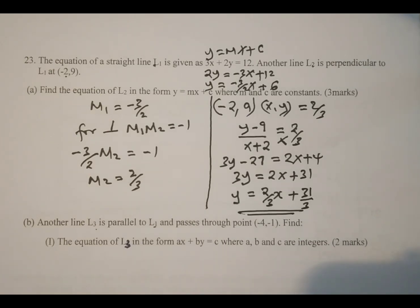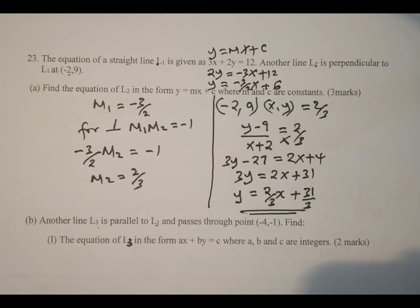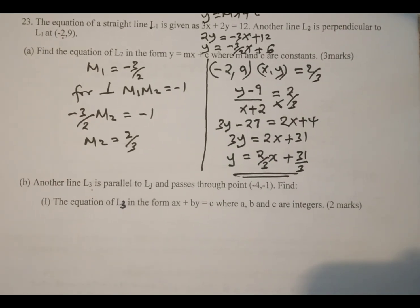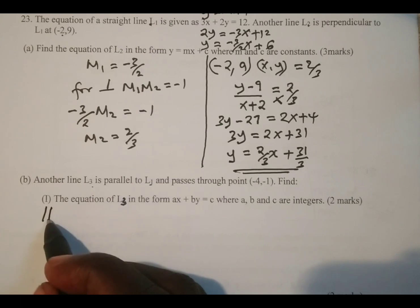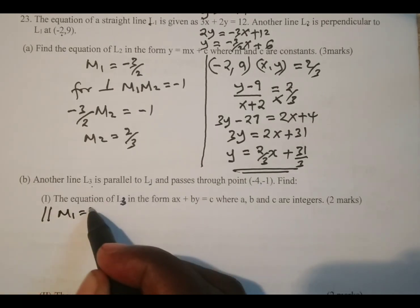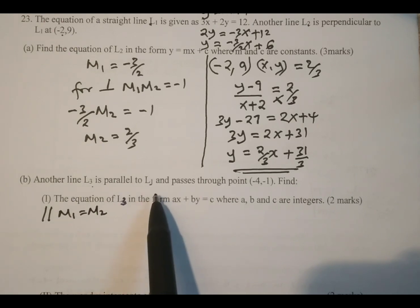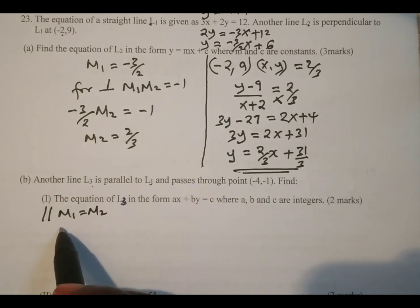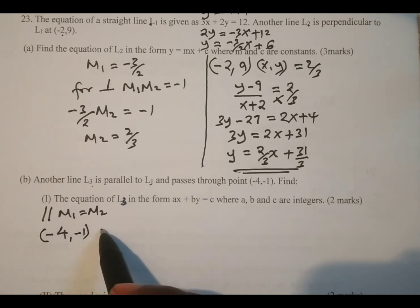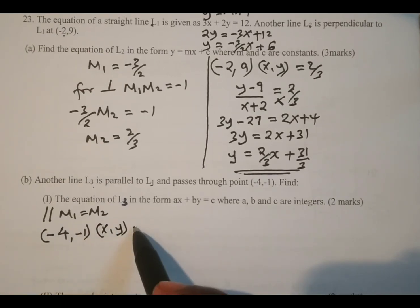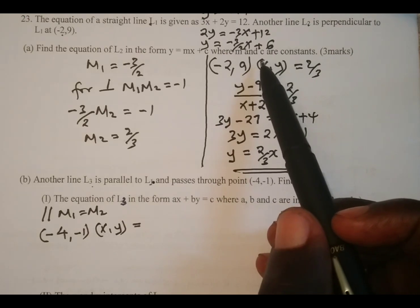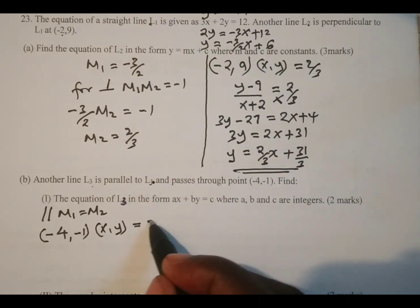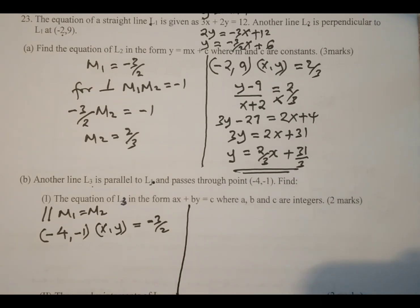Remember to subscribe and also share the link. We move to part B. Another line L3 is parallel to L1, and for parallel lines m1 equals m2, meaning parallel lines have equal gradients. We pick the given point negative 4, negative 1 and another arbitrary point xy. The gradient of L1 is negative 3 over 2, so we proceed to find the equation.